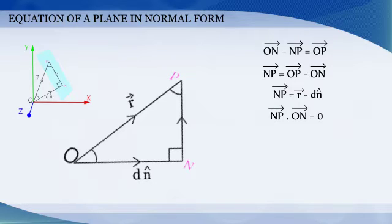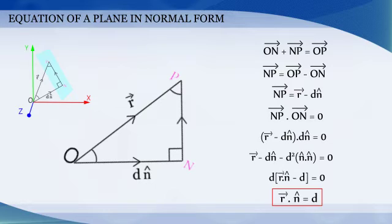NP vector dot ON vector is equal to 0. Therefore, r vector minus d into n cap dot d into n cap is equal to 0. On simplification, we get r vector dot n cap is equal to d.